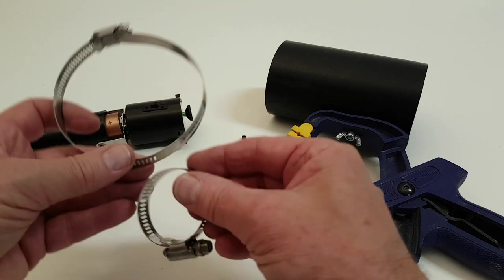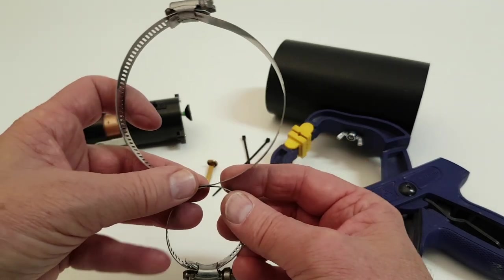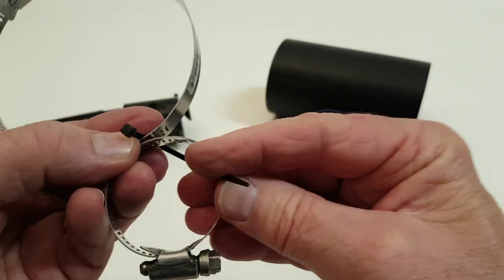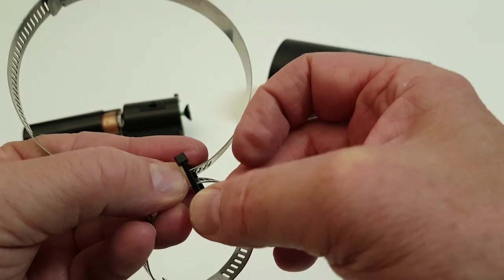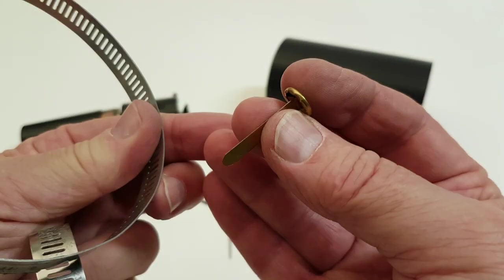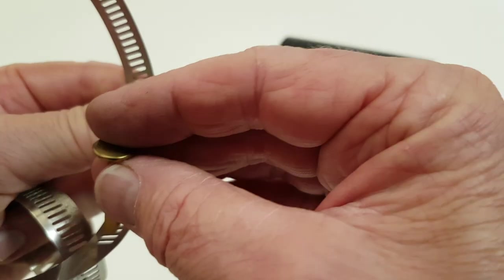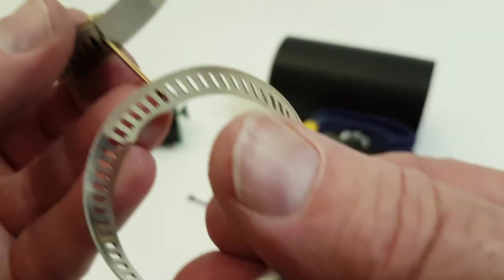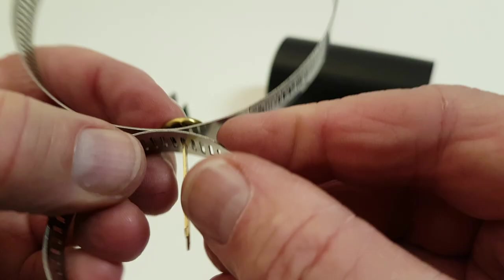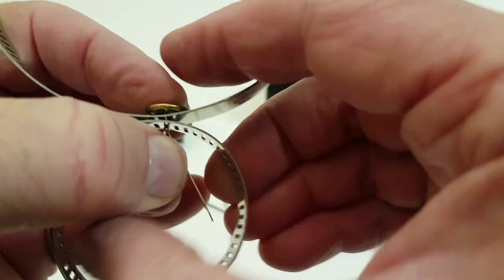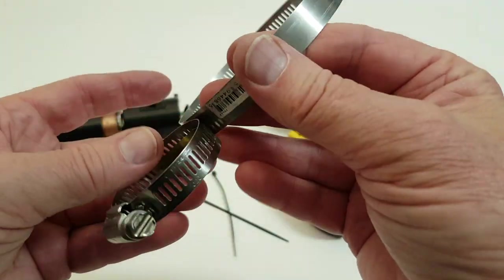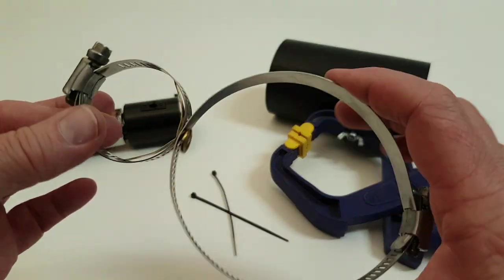To attach the motor to the ABS pipe we will be using the two hose clamps. First we need to join the two together. You can either use two small zip ties or use the brass paper fastener. I'm using the paper fastener. Piggyback the hose clamps and starting with the large clamp slip the ends of the fastener through the slots on the two clamps. Flare out the two legs of the fastener to join the two clamps together much like a rivet.